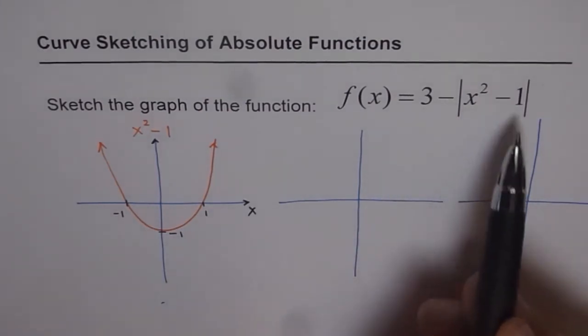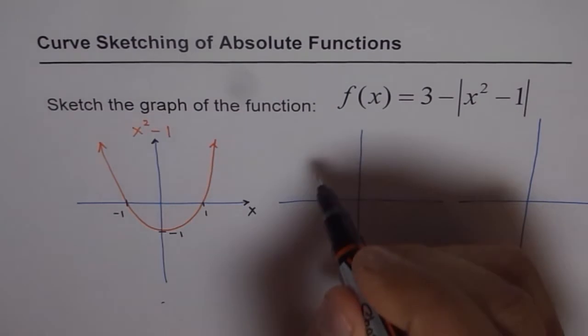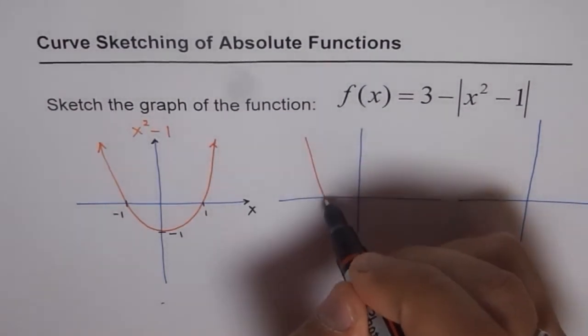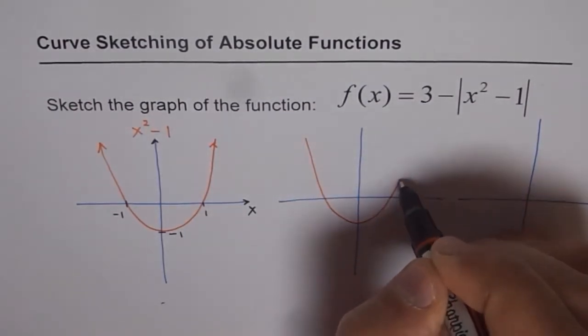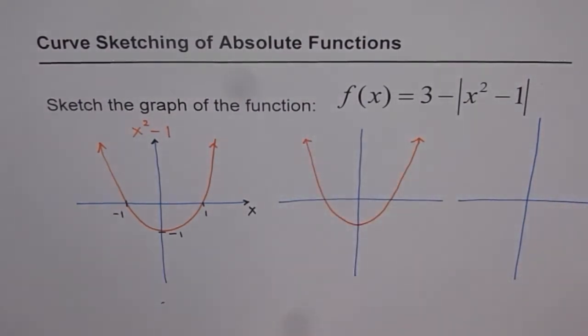Now if I have to make absolute of this function, then what should I do? So what I have here is kind of my function like this. So this is my x squared minus 1. Now if I have to do absolute of this function, then in that case, how can I change it to absolute function?